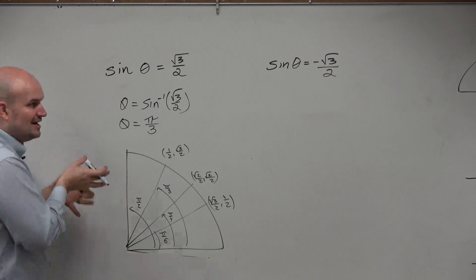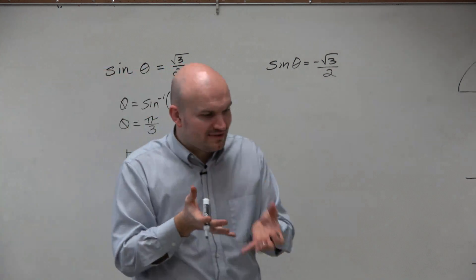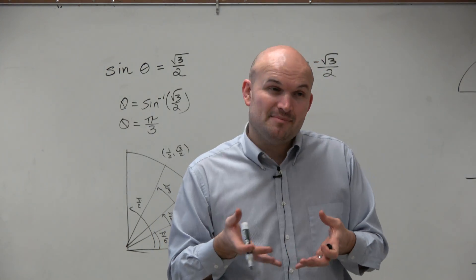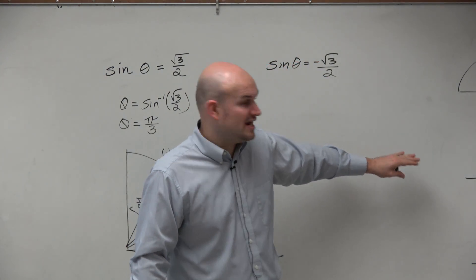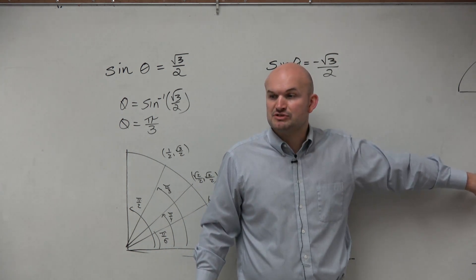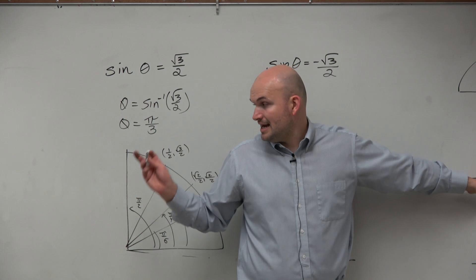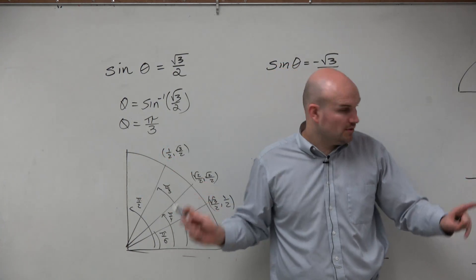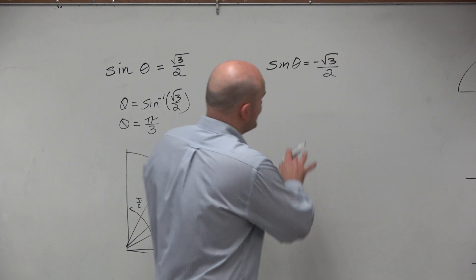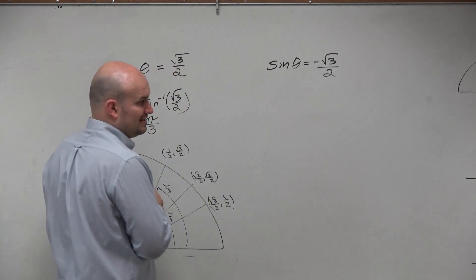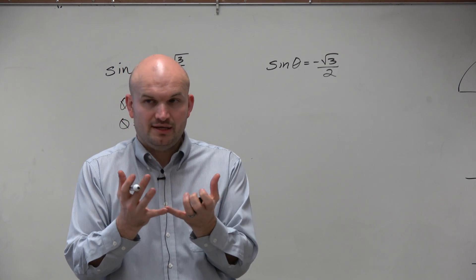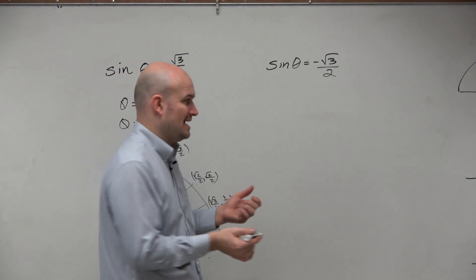Now let's get into the point of this, which is to represent that this has changed. Again, if we look at the constraint — does that angle fall within the constraint of our domain that sine is restricted on? Pi over 3 is in the first quadrant, so it falls within the constraint — we're good. Now let's look at negative square root of 3 over 2. This is where the information of using that restricted domain comes in handy.